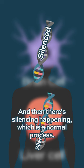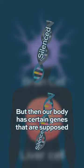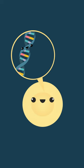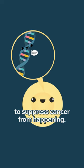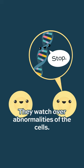And then there's silencing happening, which is a normal process. But our body has certain genes that are supposed to suppress cancer from happening. They watch over abnormalities of the cells.